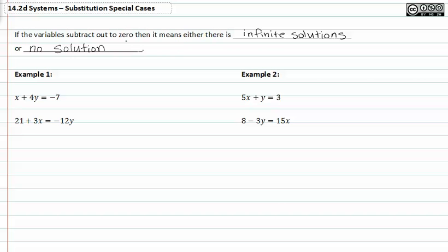In example one, I'm going to solve for x and then substitute that piece in for x in the second equation. I'll do this by subtracting 4y from both sides. When I do this, I get x is equal to negative 4y minus seven.